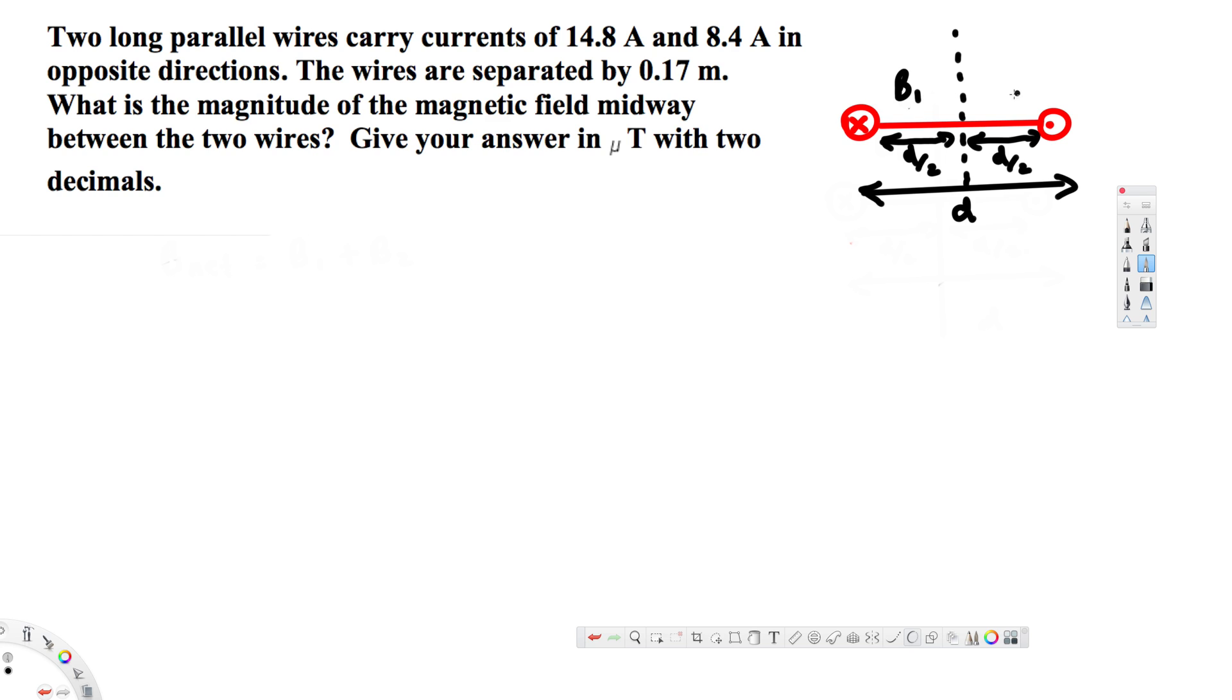This is B1 and this is B2. So here we are trying to find the net magnetic field. To find the net magnetic field we have to add them together, B1 plus B2. And since they have mentioned this is a long wire, we have to use this equation for magnetic field: that is mu naught I1 over 2 pi times d by 2, since the distance is midway.